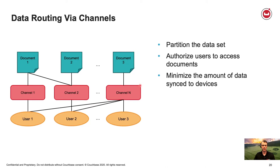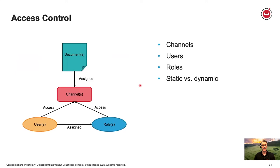On access control: documents are assigned to channels, and users have access to channels. There's also the concept of roles — users are assigned to roles, and roles can also have access to channels. A good way to think of this is an organizational hierarchy with employees and managers represented by different users. They might have access to their own specific channels, but a manager role could grant all manager users access to different manager-specific channels. Access can be defined statically in the configuration or dynamically in the sync function.